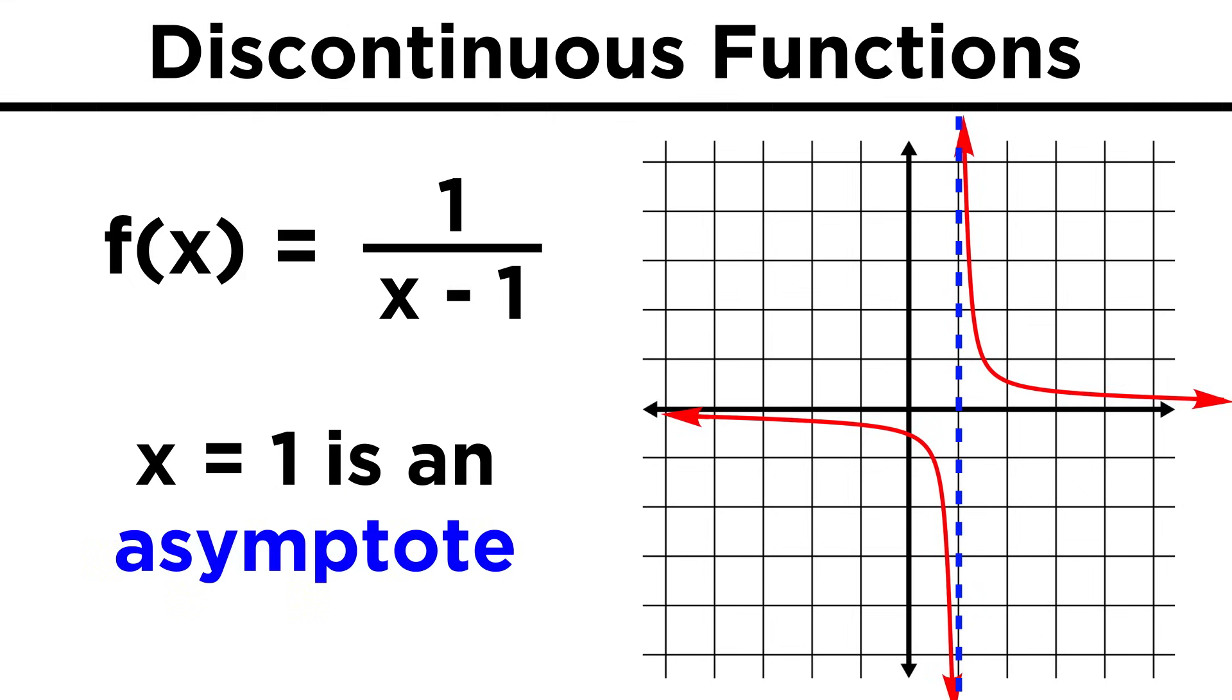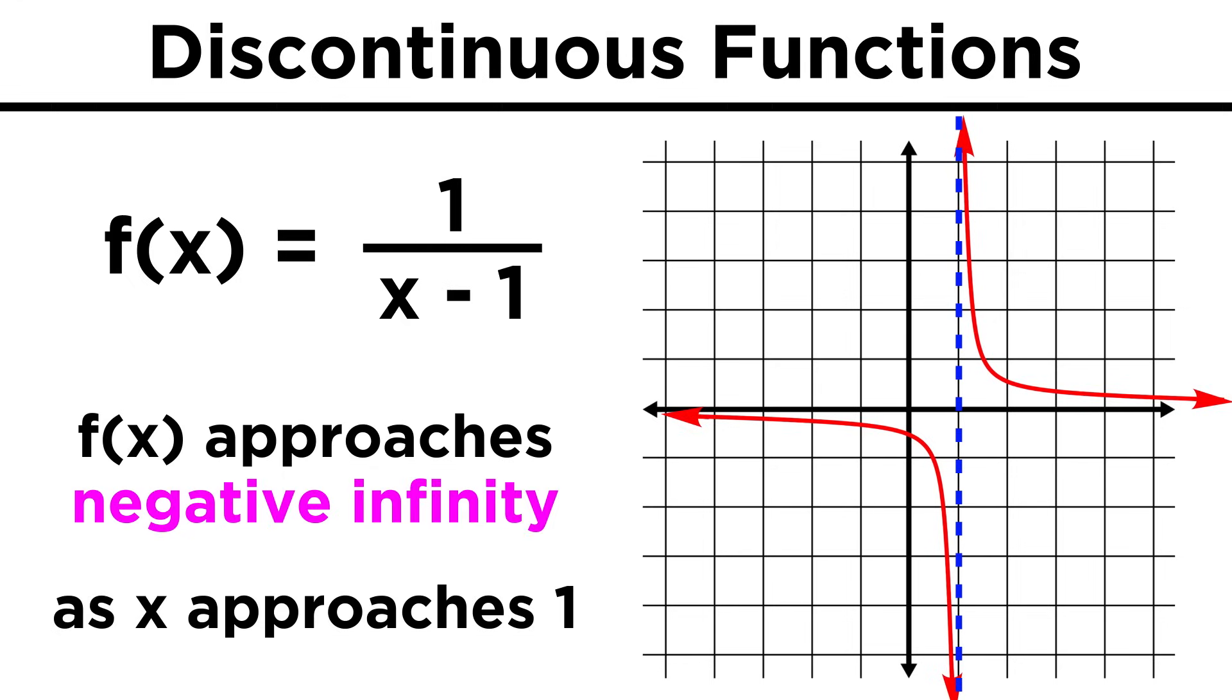Instead, x equals one acts as an asymptote. This is a line that is not part of the function, but instead, the function gets closer and closer to the line without ever touching it. We can see that as the function approaches x equals one from the left, smaller and smaller changes in x are producing greater and greater changes in the function. This continues towards the limit of negative infinity as x approaches one.